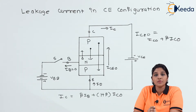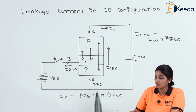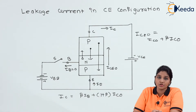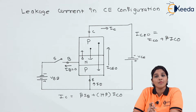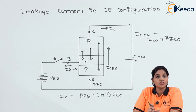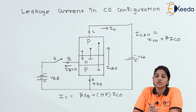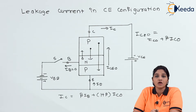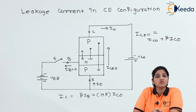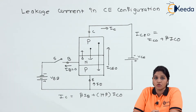After the emitter region, the holes enter into the base region. At the base region, the holes get combined with the electrons. As the width of the base region is small, very few holes get recombined with the electrons, and this constitutes a current i.e. the base current. The value of base current is small because the base width is small.